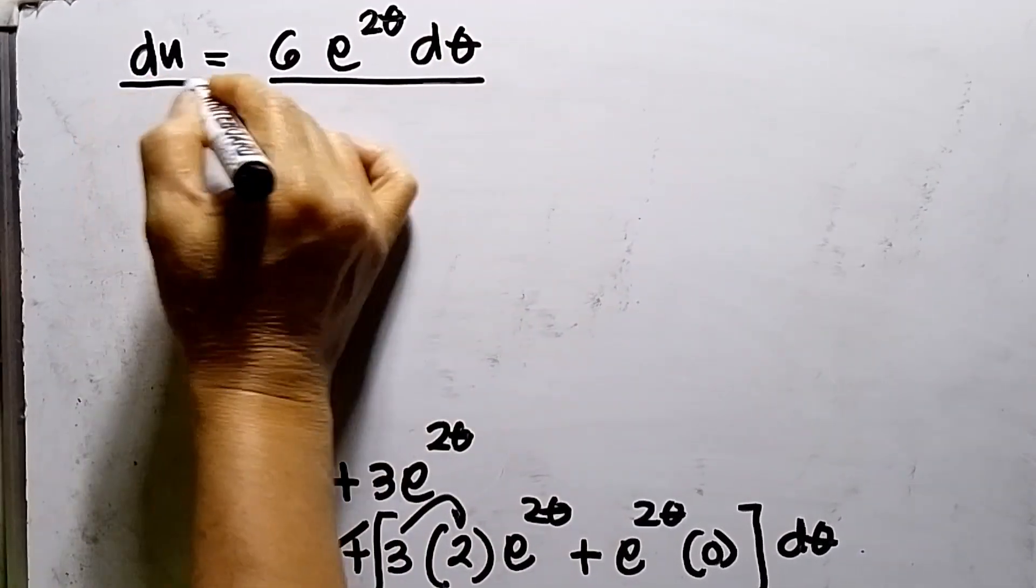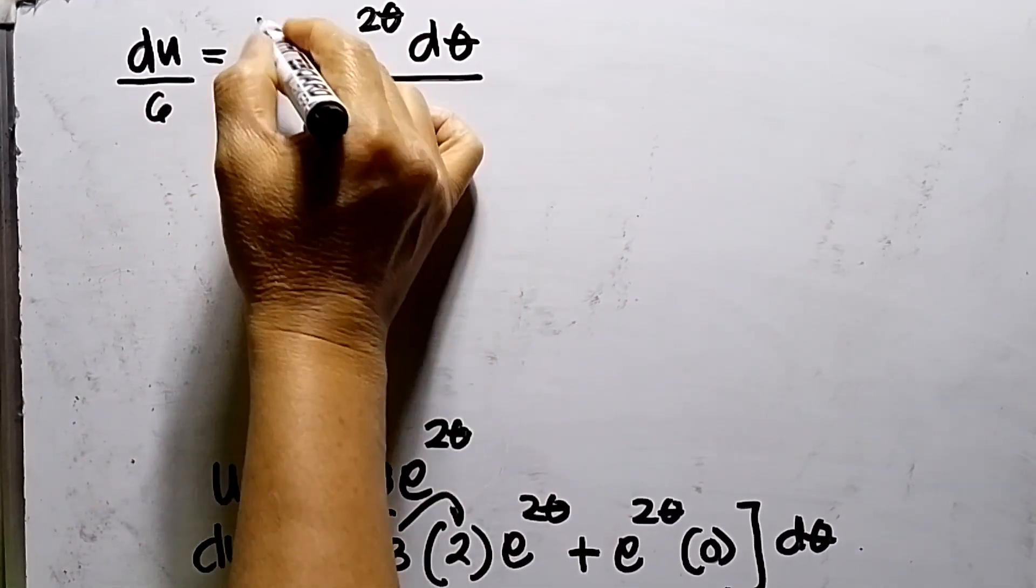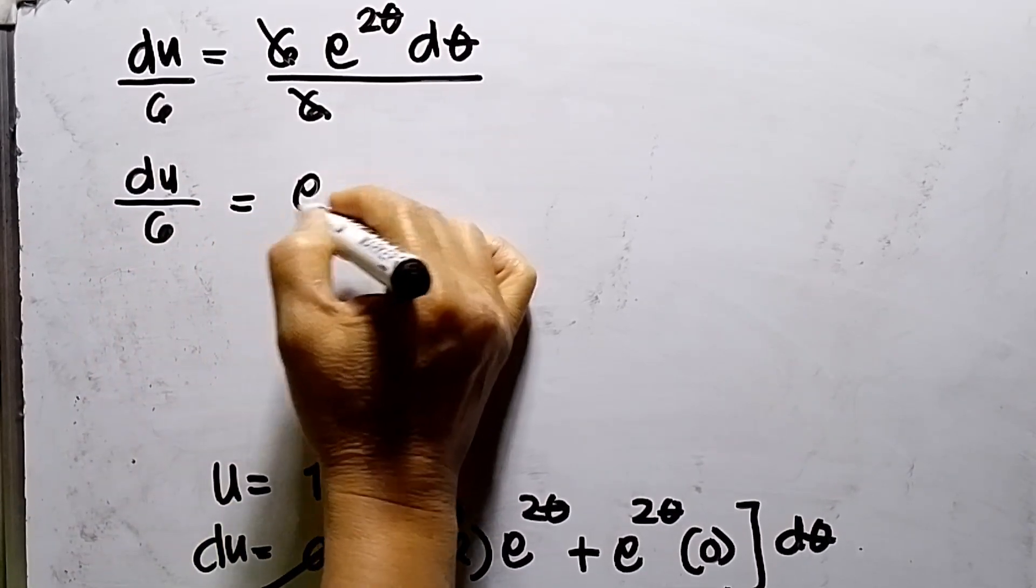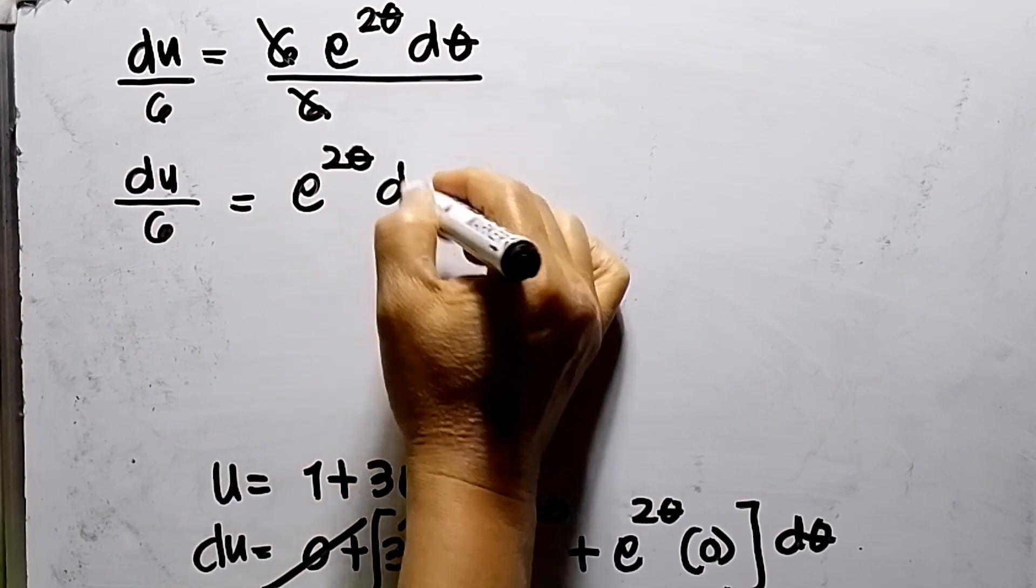So I need to divide both sides by 6, so 6 will be crossed out. So I have now du over 6 is equal to e to θ dθ.